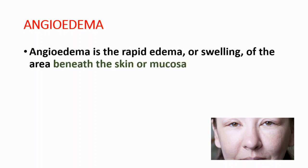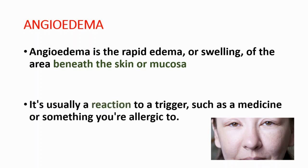Hey everyone, this is your daily dose of medicine. In this episode, we are going to talk about angioedema. Angio means blood vessel, and edema means accumulation of fluid in body tissues. So angioedema is the rapid edema or swelling of the area beneath the skin or mucosa. It is usually a reaction to a trigger, and the trigger could be a medicine or something you are allergic to.